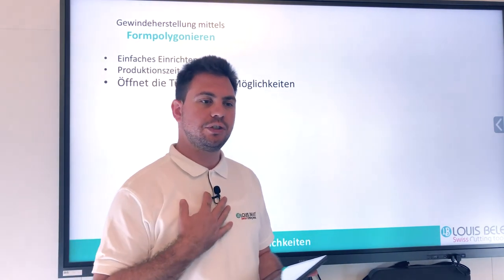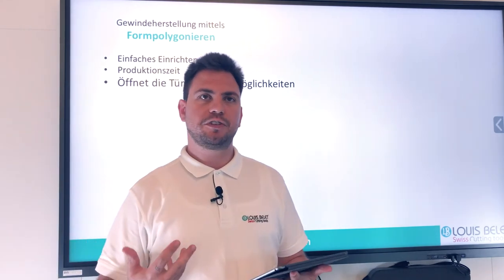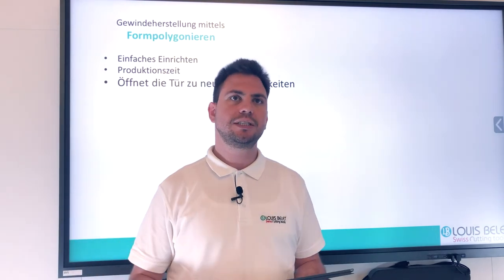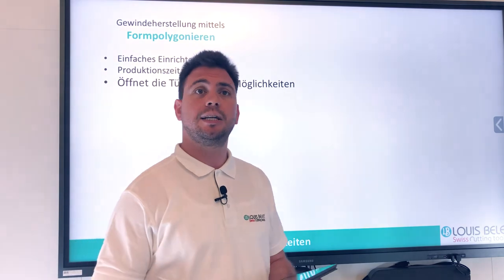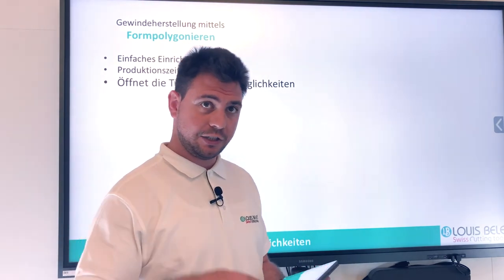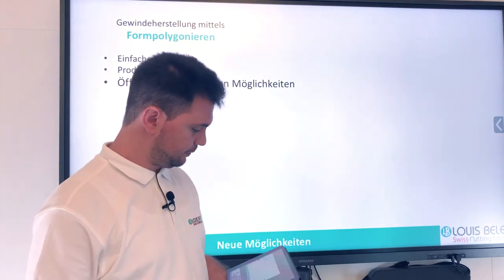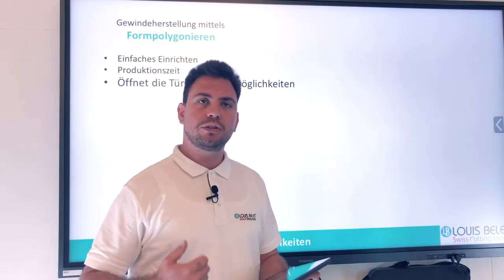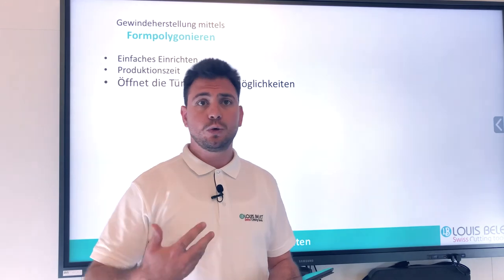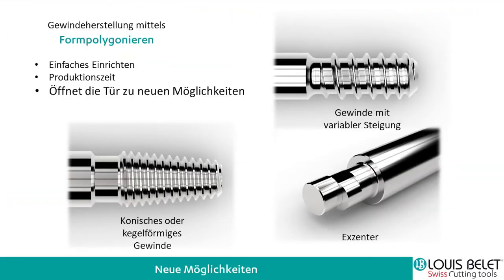Ein weiterer Vorteil ist die Standzeit: da wir mit diesem Fräser wirklich viele Zähne haben, wenn ein Zahn mal etwas verschlissen ist, ist der Fräser noch nicht vorbei – nicht wie bei einer Wendeplatte oder beim Formgewindewirbeln. Die hohe Zähnezahl auf solchen zirkularen Fräsern bringt eine Erhöhung der Standzeit. Es öffnet auch die Tür für andere Möglichkeiten: man könnte sich ein konisches oder kegelförmiges Gewinde vorstellen – wir würden das Gegenstück herstellen, wenn wir das DXF haben oder Sie uns die verwendete metrische Norm nennen. Auch hier wird es nur eine Eintauchoperation sein.